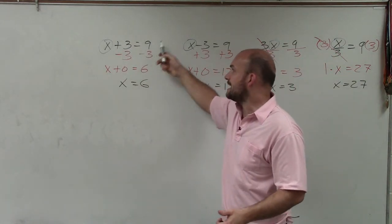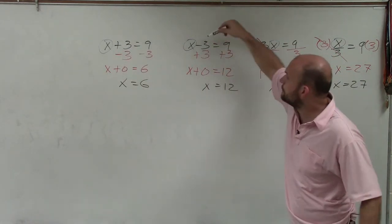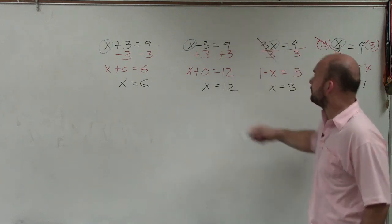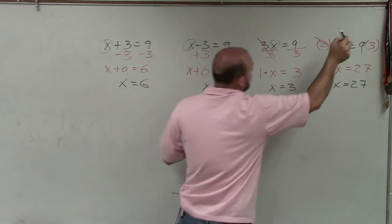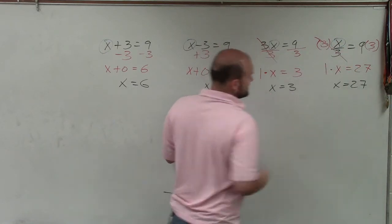What number plus 3 equals 9? 6. What number minus 3 equals 9? 12. What number times 3 equals 9? 3. What number divided by 3 equals 9? 27.